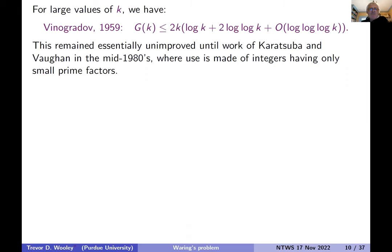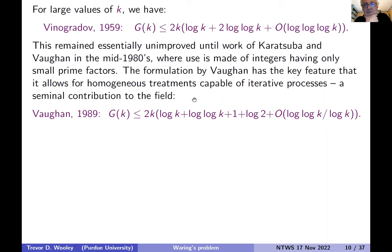Back to the plot. We've got Vinogradov's bound. And I mentioned these improvements by Karatsuba and Vaughan using integers with small prime factors. And I'd really like to highlight the contribution that Bob made here. So he really reformulated and came up with a formulation of the use of integers with small prime factors in a way which makes the method very flexible and capable of iterative processes.